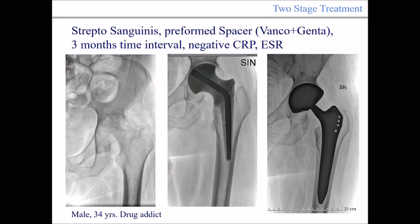From our series: a case of Streptococcus sanguinis in a 34-year-old man who was a former drug addict. We placed a preformed spacer with vancomycin and gentamicin, a three-month time interval, with negative CRP and ESR. This is the second stage result.